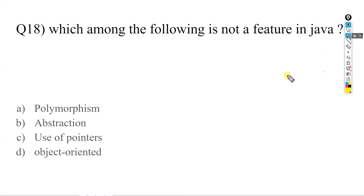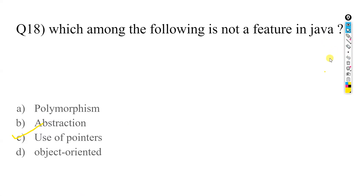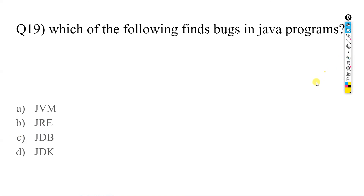Which among the following is NOT a feature of Java? The options are polymorphism, abstraction, use of pointers, and object-oriented. Java supports polymorphism, abstraction, and is object-oriented. The answer is C — use of pointers is not allowed in Java, so it is not a feature. Next: which of the following finds bugs in Java programs? Options are JVM, JRE, Java Debugger, and JDK. The answer is C — Java Debugger is responsible for finding bugs.